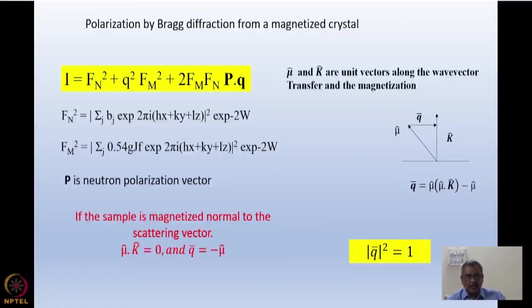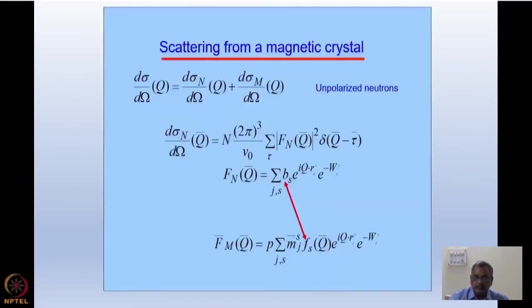So this is here and as I said, if the sample is magnetized normal to the scattering, mu · k is 0 and q is equal to minus mu and amplitude is a unit vector and q square is equal to 1.